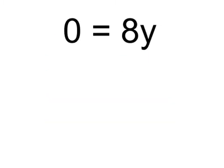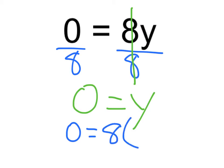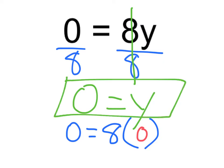Here we have 0 equals 8y, or 8 times y. We need to get y by itself, so let's divide both sides by 8. The 8s cancel out, so all we're left with is y. And 0 divided by 8 is 0. Let's check: 0 equals 8 times 0 — any number times 0 is 0. So y equals 0 is our answer.